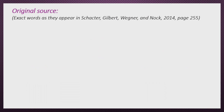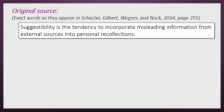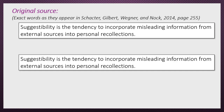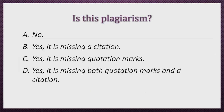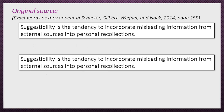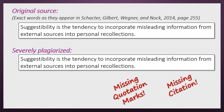Here's an example of the original source, which contains exact words as they appear in a book by Schachter, Gilbert, Wagner, and Nock, 2014, on page 255: "Suggestibility is the tendency to incorporate misleading information from external sources into personal recollections." Suppose in your paper you write that same sentence without quotation marks and without a citation. Is this plagiarism? The answer is a resounding yes. This is severely plagiarized as it is missing both quotation marks and a citation. By writing this sentence without quotation or citation, you are telling the reader that these words and these thoughts are your own, neither of which is true.